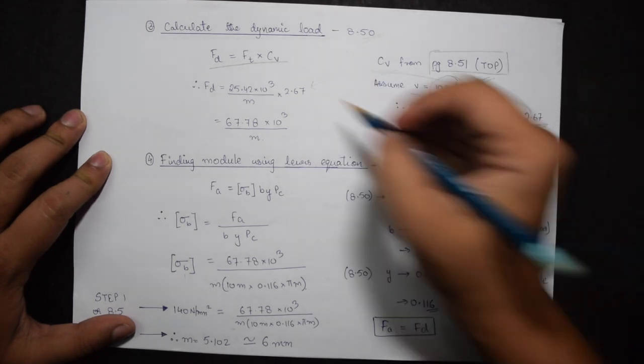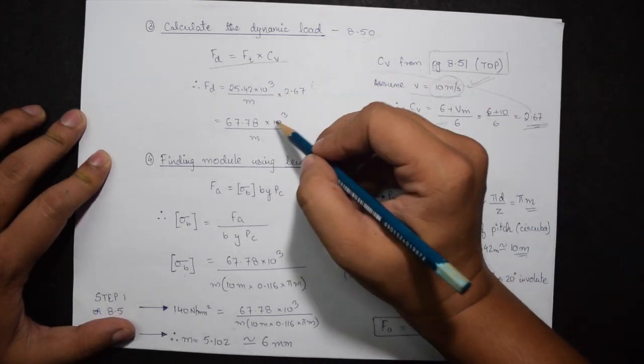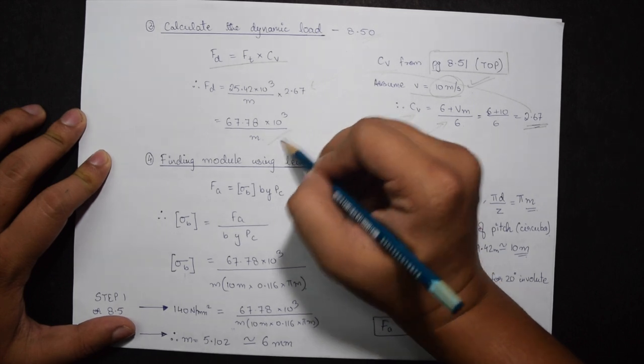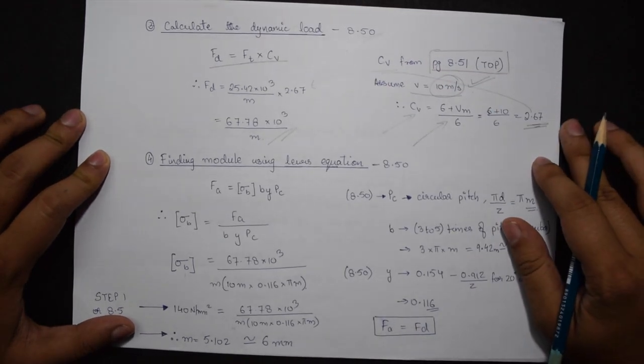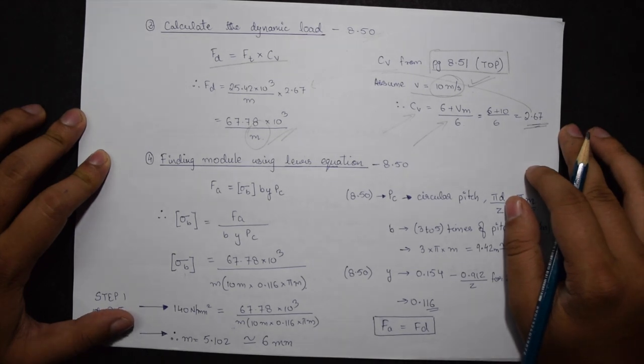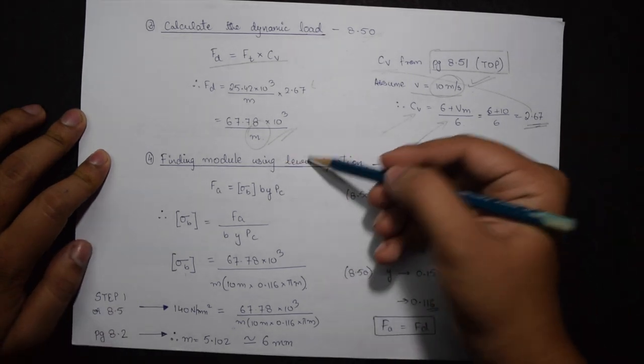Plugging in this formula, we get the value 67.78 times 10 to the power 3 divided by M. Again, this value is in terms of M. M is the module we will be calculating in step number 4.